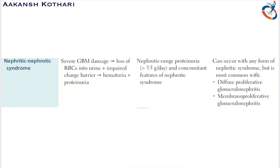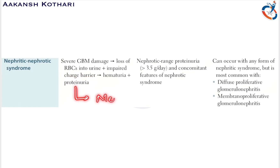In nephritic-nephrotic syndrome, there is severe damage to the glomerular basement membrane. This is severe nephritic syndrome which leads to loss of RBCs into the urine, and since it is at a severe level, there is also excessive proteinuria, placing it in the nephrotic range. The proteinuria is more than 3.5 grams per day, and it has concomitant features of nephrotic syndrome.